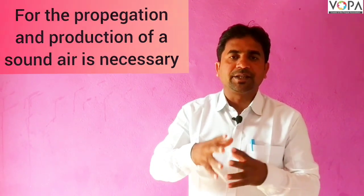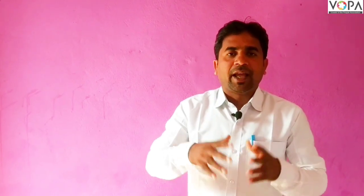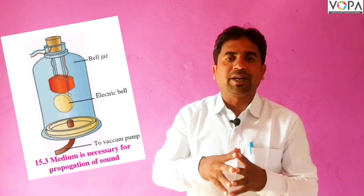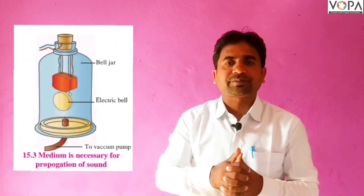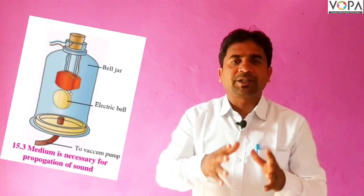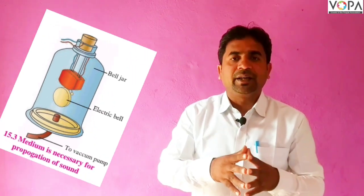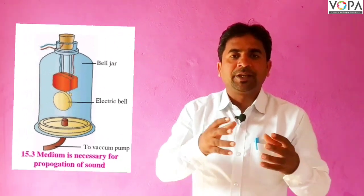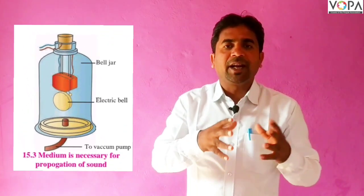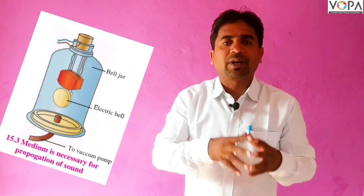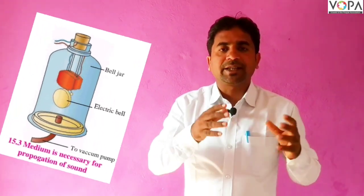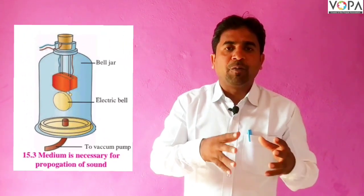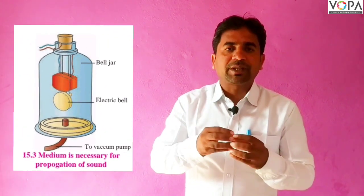Now we discuss the propagation and production of sound, for which air is necessary. Take a look at these pictures for the experimental arrangement. Take a bell jar placed on a smooth horizontal surface and connect it to a vacuum pump through a tube. The vacuum pump helps to remove air from the bell jar. An electric bell is also connected inside the bell jar.